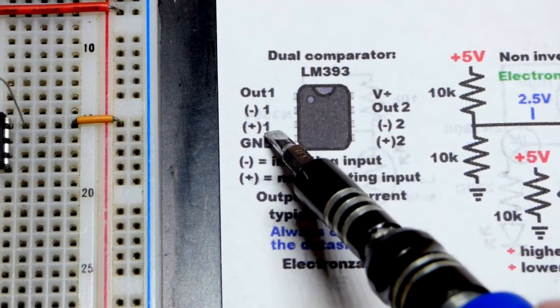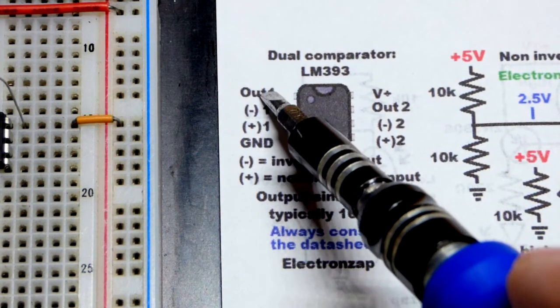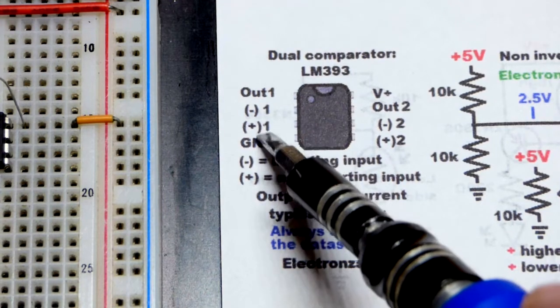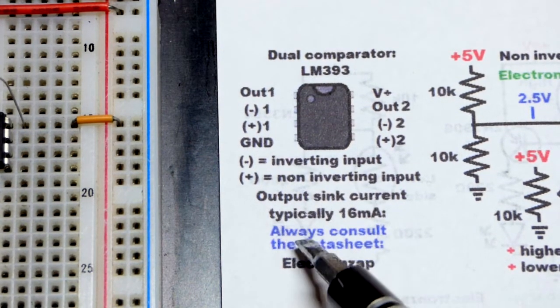But in this case, we have a comparator on the left side and the right side. We're just going to use the one on the left side. Output at the top, inverting input below it, and non-inverting input below that. Now, there's an interesting thing on the data sheet. I always read the data sheets.